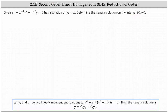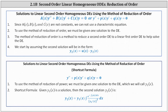For a quick review, a linear second order homogeneous differential equation must fit one of the forms shown below, where the second form is obtained by dividing through by A(x). Since A, B, and C are not constants, we cannot use a characteristic equation. To use the method of reduction of order, we must be given one solution to the differential equation. The method reduces a second order differential equation to a linear first order differential equation to help solve the equation.